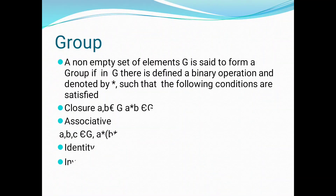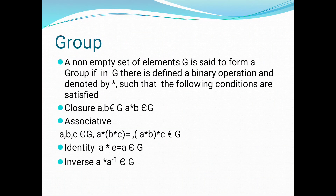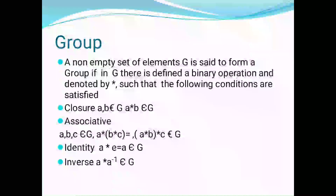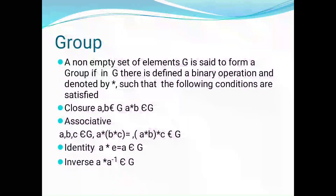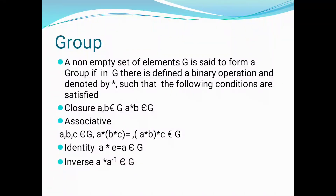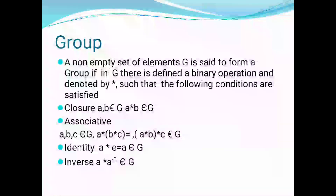First, we see the definition of a group. A non-empty set of elements G is said to form a group if in G there is defined a binary operation, denoted by star, such that the following conditions are satisfied: first is closure, second is associative, third is identity, and fourth is inverse.